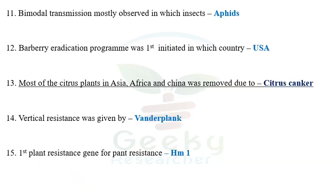The eleventh question: bimodal transmission is mostly observed in which insects? Bimodal transmission is observed in aphids. The virus where bimodal transmission is observed is Cauliflower mosaic virus, which can be transmitted by two modes: insects and sap transmission. The bimodal transmission in Cauliflower mosaic virus was first discovered by Chalfant and Chapman in 1962. I think this question has also been asked in earlier exams, perhaps 2014 or 2015.